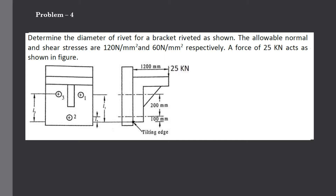Our objective is to find the diameter of the rivet for a bracket riveted as shown. We consider a wall — plate one — and a bracket numbered two. The bracket is fixed onto the wall using three rivets. In the front view, we can see three rivets: one, two, and three. Rivets one and three are along the same horizontal line.